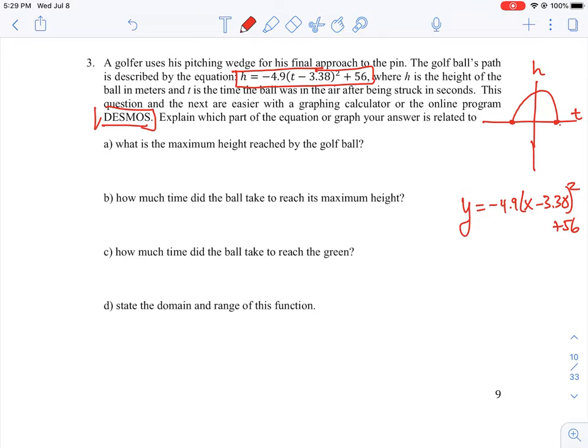The questions we're asked to look at: what is the maximum height reached by the golf ball? The maximum height is essentially the vertex. How much time did the ball take to reach maximum height? And how much time did the ball take to reach the green when it lands? Then we can look at the domain and range for this function.